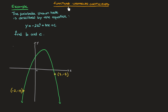In this video on functions with unknown coefficients, I'm going to work through an example in which we're given a parabola whose equation is y equals negative 2x squared plus bx plus c, and we need to find the two unknown coefficients b and c. The whole idea behind problems like this one is to use the information given on the graph to derive equations for the unknowns, so in this case for b and c.